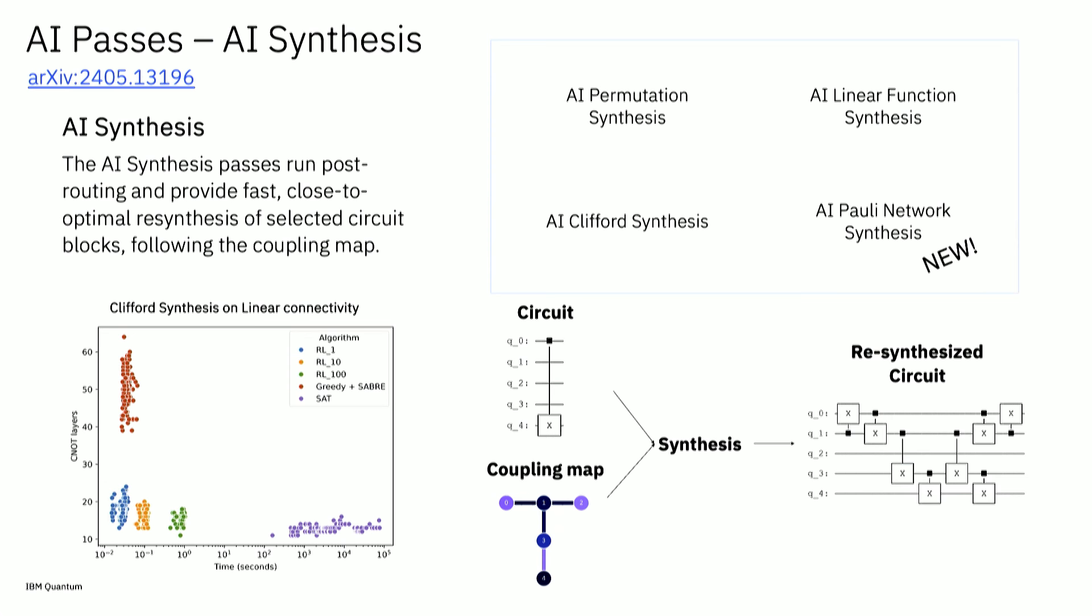The idea about these passes is that you can take a circuit made of the gates that each kind allows and express it in a compact way, like the Clifford tableau for a Clifford. Each of these have a specific representation. Then you re-implement the circuit hoping you can get something better than the original circuit. If you can, you replace that block and optimize that piece. The interesting thing is we could re-implement the circuits at the same time as we follow a coupling map. That means we can apply this optimization without breaking the routing.